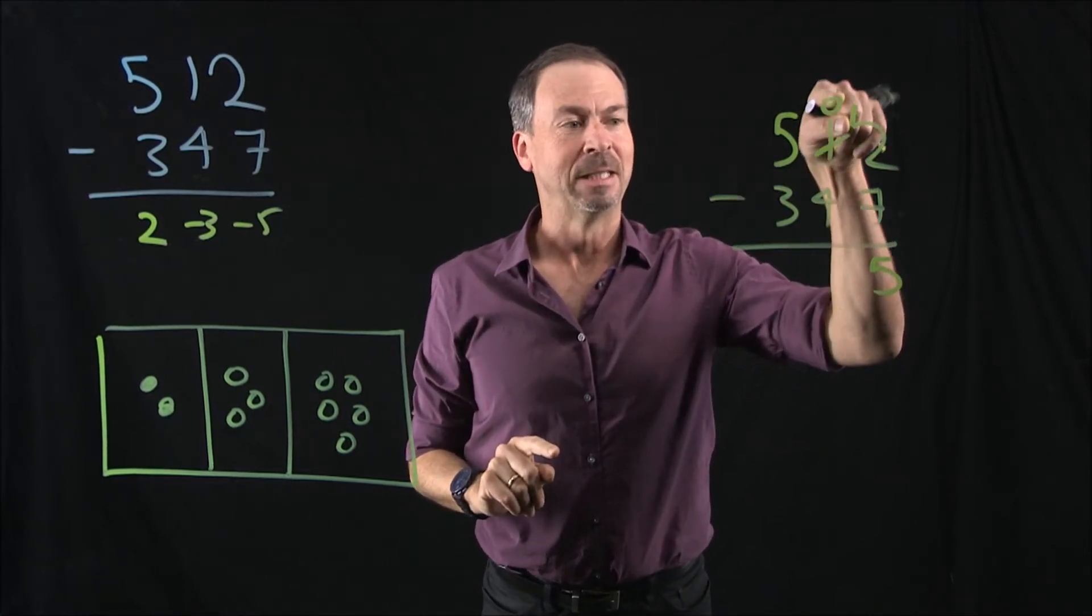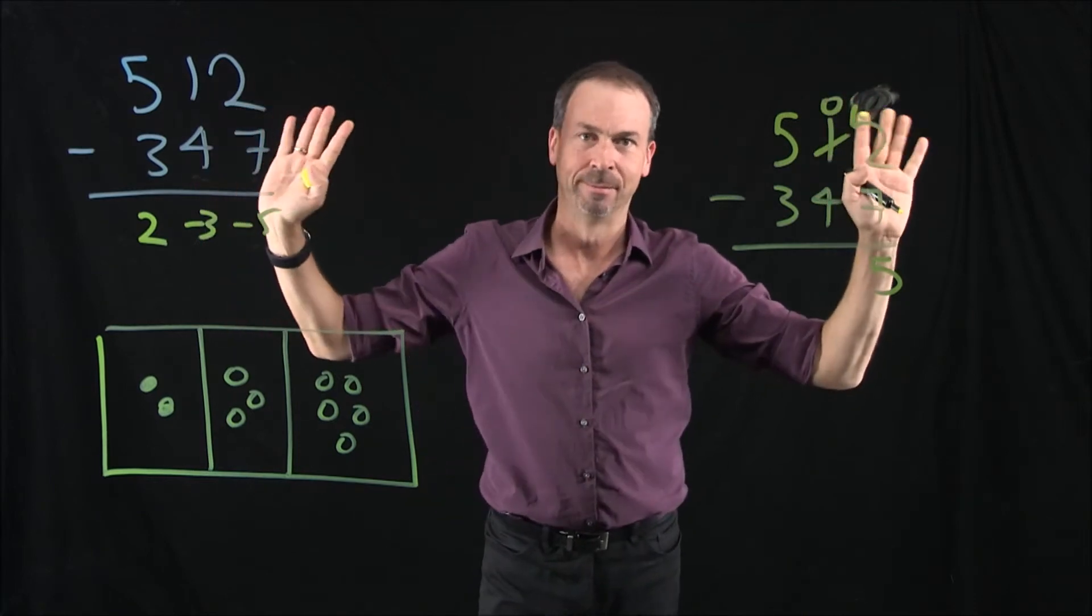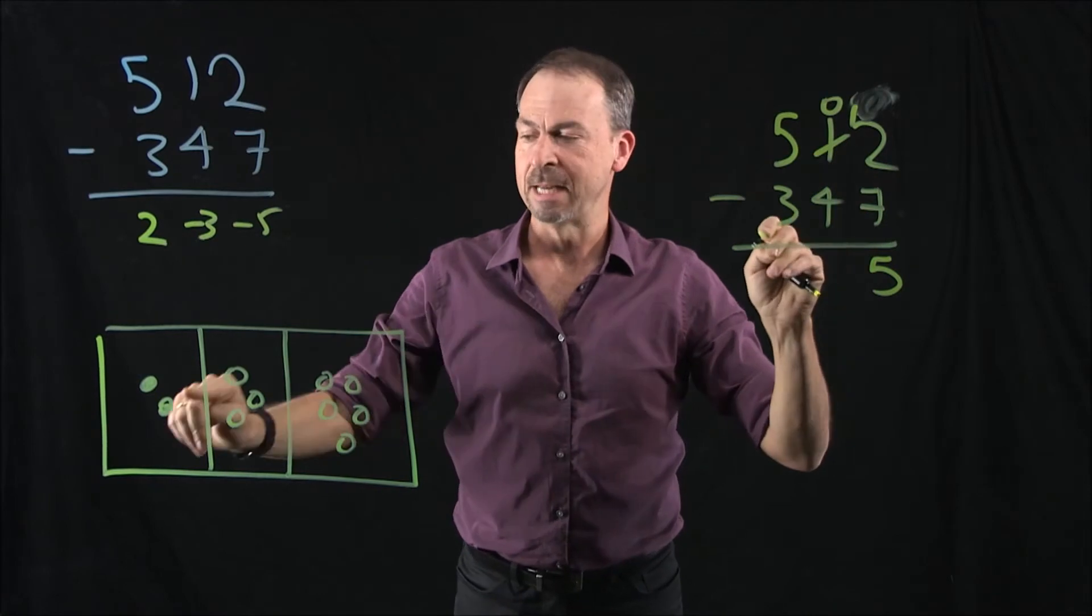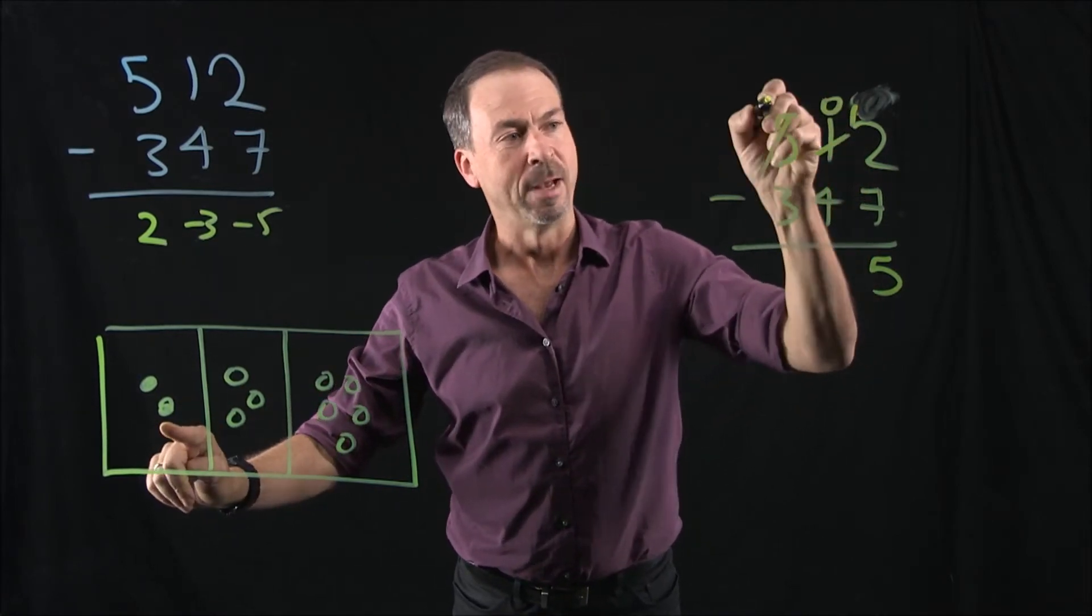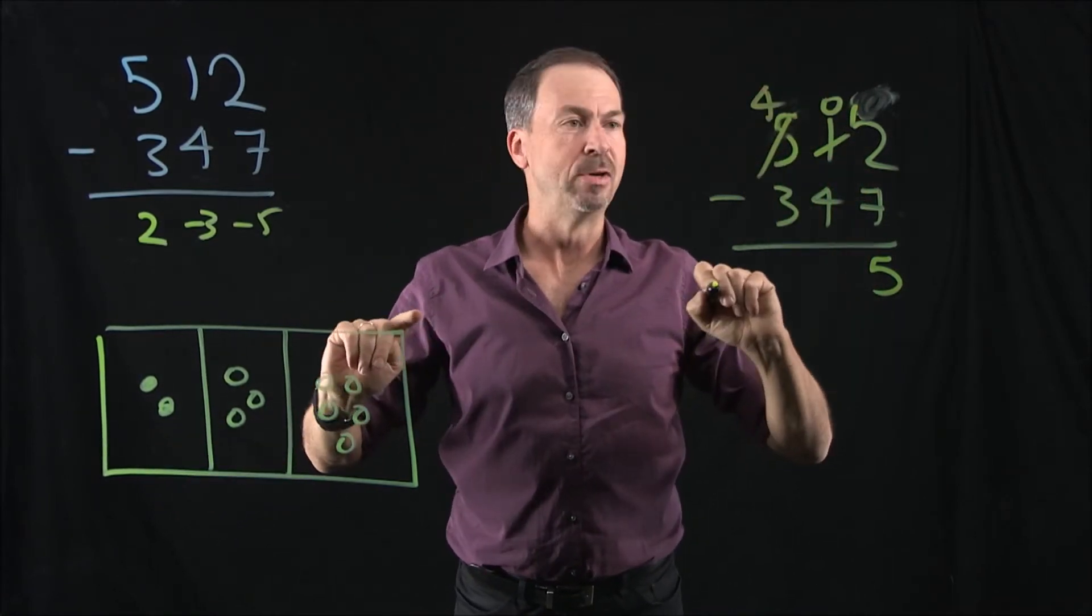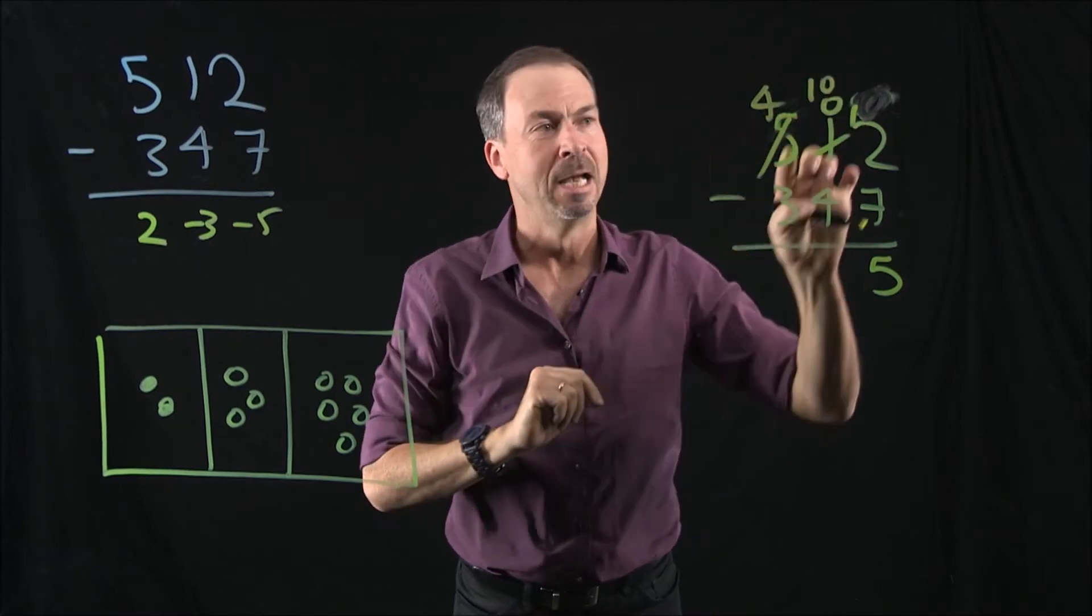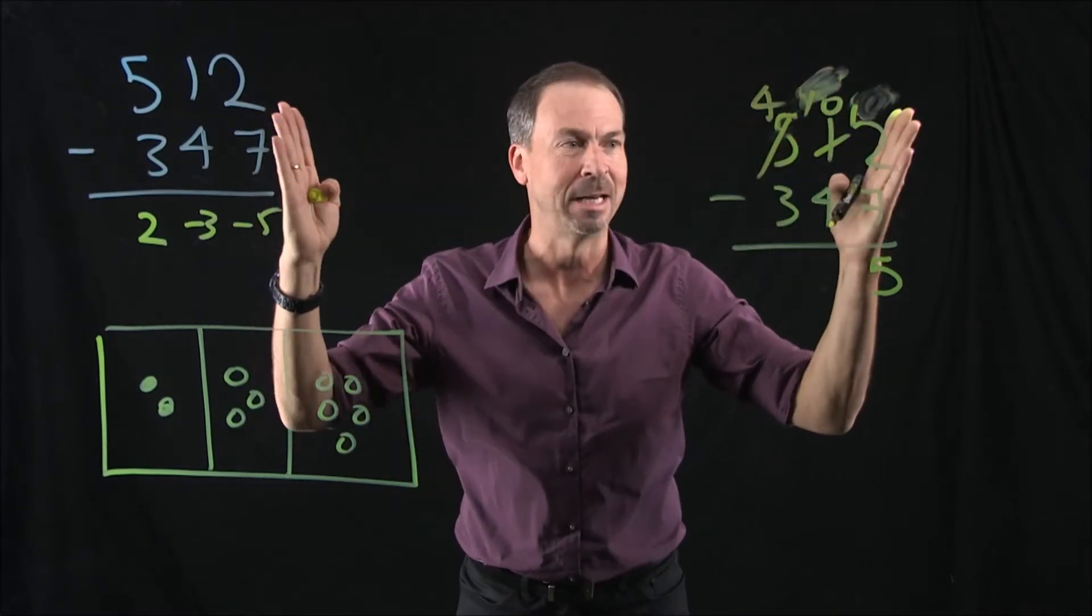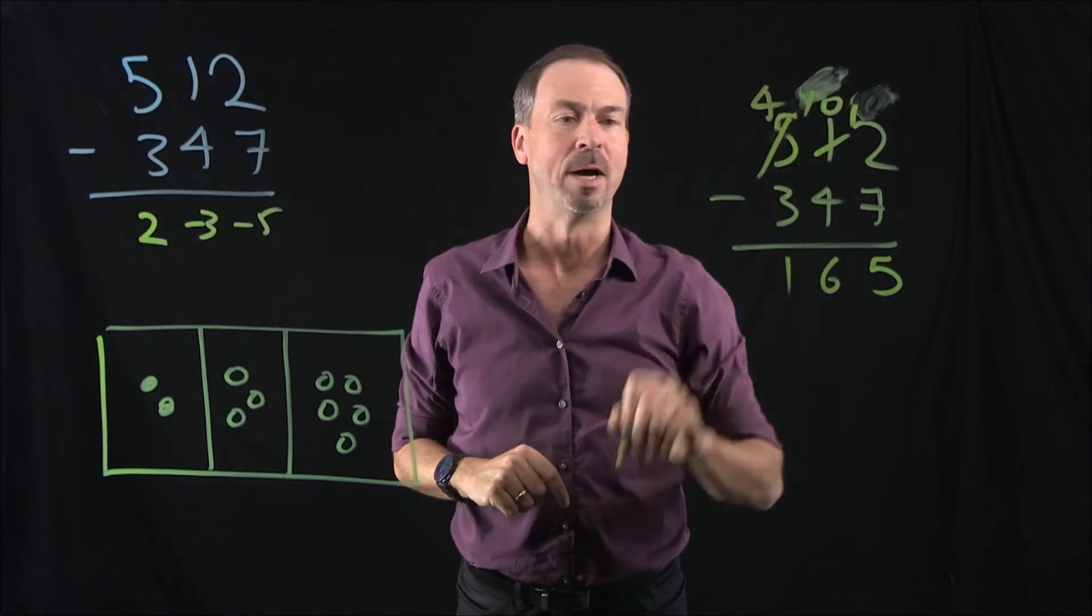Then you go to the next column. Zero take away 4. Say you can't do it. Well, of course you can. You can write negative 4 and be correct. However, in the standard algorithm, they say, no, no. Take one of these dots, make one less. And then what I'm going to do now is unexplode and make an extra 10 here. But you don't write 10. You just put a little 1 next to it. Just make that 1, 0, actually 10 to begin with. 10 take away 4 is 6. 4 take away 3 is 1.